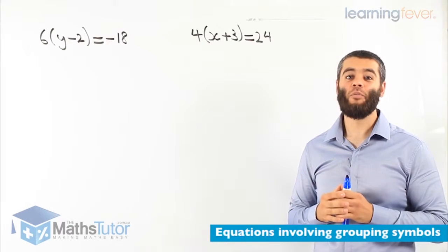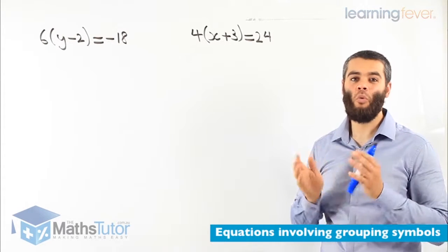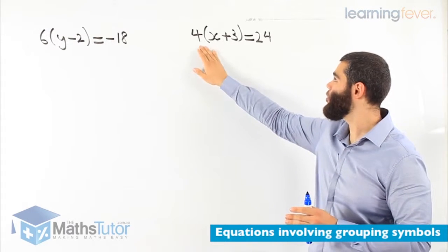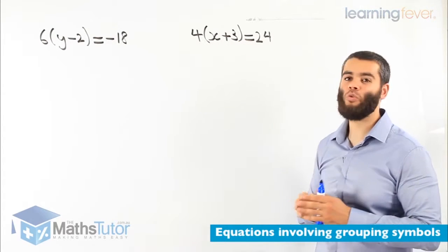Hey guys! Again, more equations, this time with grouping symbols. What do we do here? We have 4, open bracket, x plus 3, close bracket, equals to 24.